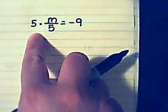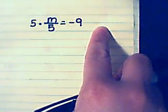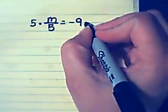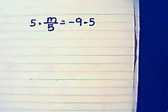I can't multiply this side by 5 and not do anything to this side, because I have to keep my equation balanced. So I'm also going to multiply this side by 5.